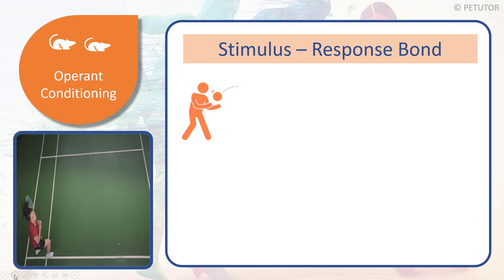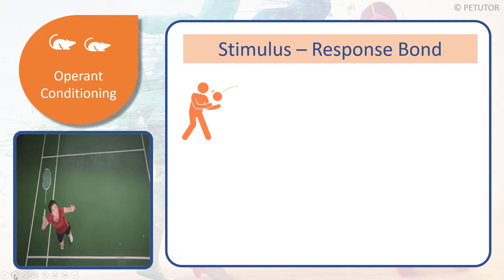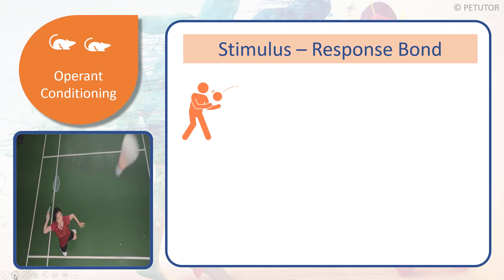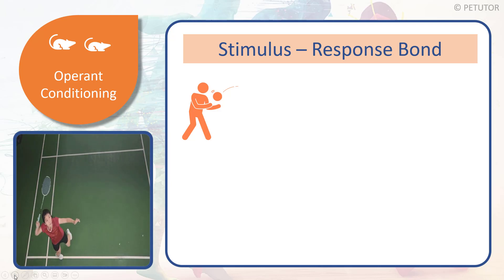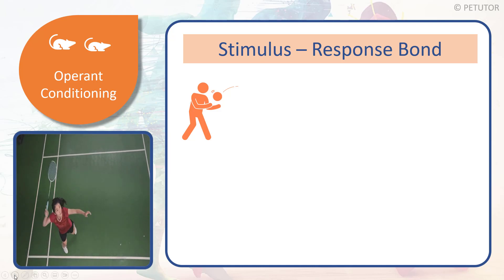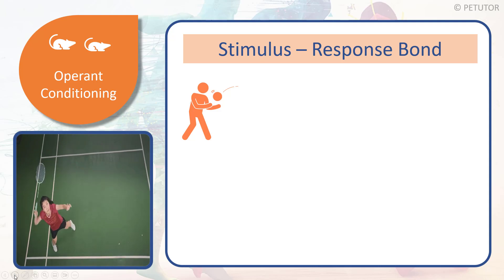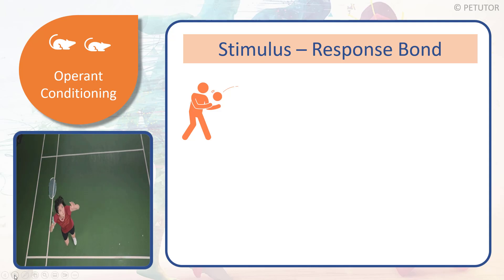Let's have a look at Stimulus Response Bond in a bit more detail. If we look at the badminton player in the left-hand corner, we can see that she's repeatedly playing the same shot. The shuttlecock has been presented to her so that she's making this smash shot — it's high, way above her head, and she manipulates herself to get into position to play that shot. So the stimulus is the shuttlecock being presented in a particular way, and the response is to play the smash shot.